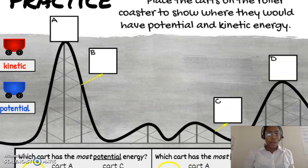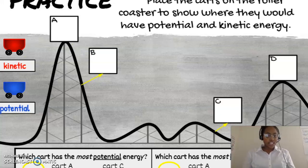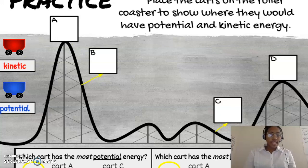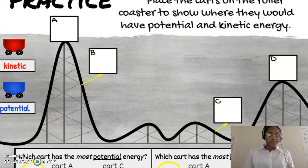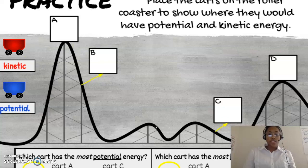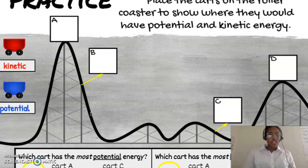Let's do a quick practice. You're going to place the carts on the roller coaster to show where they will have potential or kinetic energy. I'm going to pause and give you guys a couple of seconds to visually place the red cart for kinetic energy and the blue cart for potential energy in the correct boxes. Remember, kinetic energy is energy that is in motion — so where on this roller coaster is it in motion, and where does it show potential energy where it is not in motion or has its most energy stored?